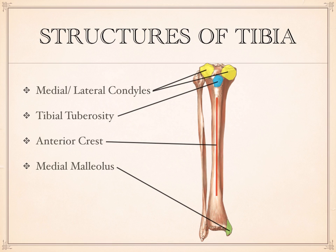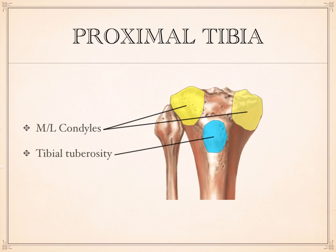Let's look at the proximal end of the tibia in a little more detail. Here are the two condyles where the femur sits, and here's the tibial tuberosity right in front. There's one other feature to point out.